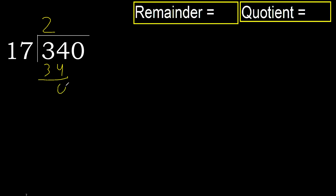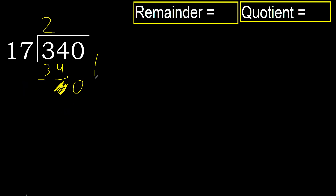Subtract. Next, eliminate 0 on this side. 0, but 0 is less therefore next — there is no number, therefore finish. Finish with this number, therefore complete here. Always complete with 0.